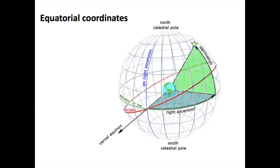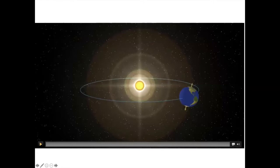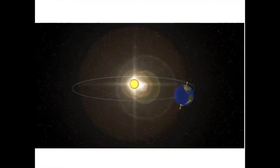The vernal equinox is the intersection between two fundamental planes of the celestial sphere. One of them, we already talked about, is the celestial equator — the circle of zero declination. The other one is the ecliptic. The ecliptic is the projection of Earth's orbit on the celestial sphere.